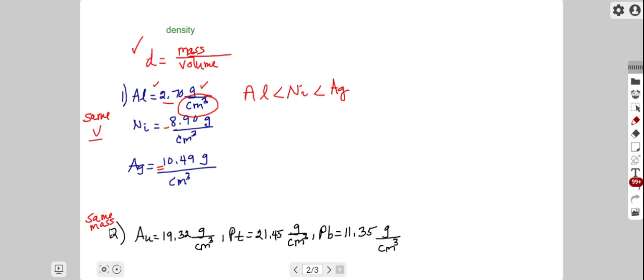Now the second question gives us three more densities for three different metals and says, if these metals now have the same mass, which will occupy the most space or which would be the smallest or the largest in terms of volume. And again, density comparison can help us here.